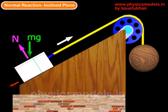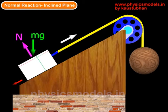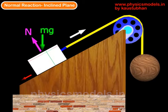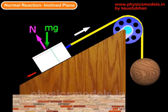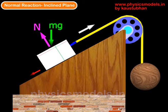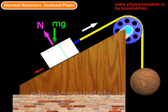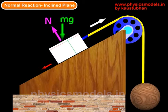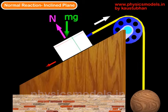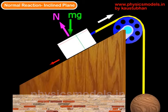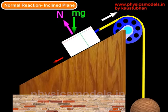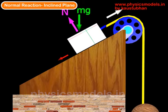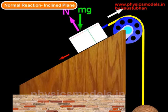In this video I'll talk about deriving the equation for normal reaction in an inclined plane. You can see a block sliding up a plane. The weight mg is shown as acting vertically downwards, and the normal reaction is perpendicular to the surface of the plane.